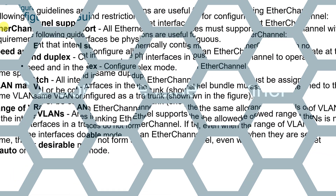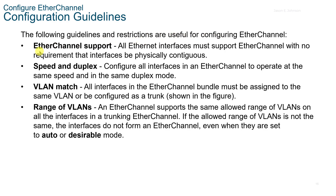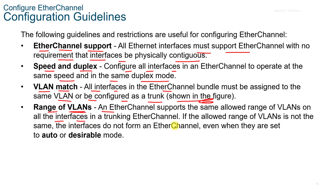6.2 Configure EtherChannel. The following guidelines and restrictions are useful for configuring EtherChannel. EtherChannel Support: All EtherChannel interfaces must support EtherChannel with no requirement that interfaces be physically contiguous. Speed and Duplex: Configure all interfaces in an EtherChannel to operate at the same speed and in the same duplex mode. VLAN Match: All interfaces in the EtherChannel bundle must be assigned to the same VLAN or be configured as a trunk. The range of VLANs an EtherChannel supports must be the same allowed range on all interfaces in a trunking EtherChannel. If the allowed range of VLANs is not the same, the interfaces do not form an EtherChannel even if they are set to auto or desirable.